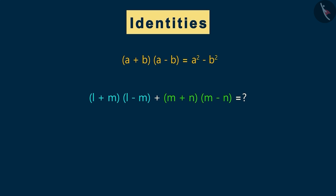We can solve this expression in two parts. This is the first part and this is the second part. Consider the first part. Since it is in the form of this identity, we can write it like this.